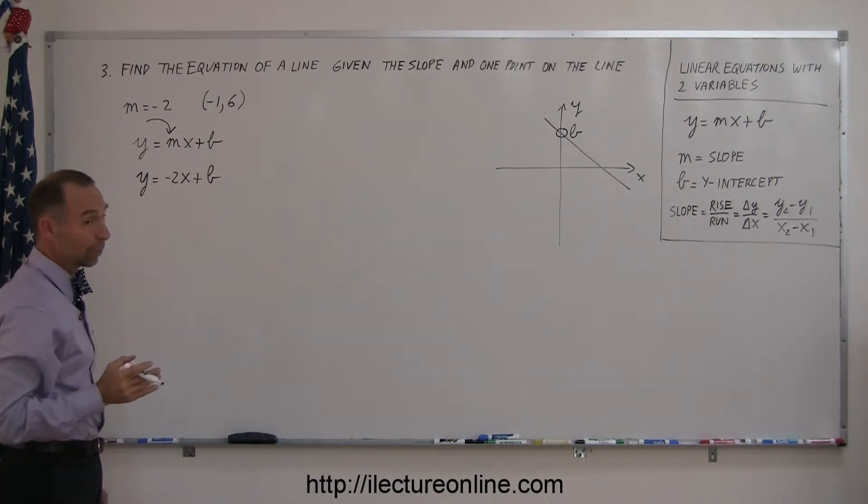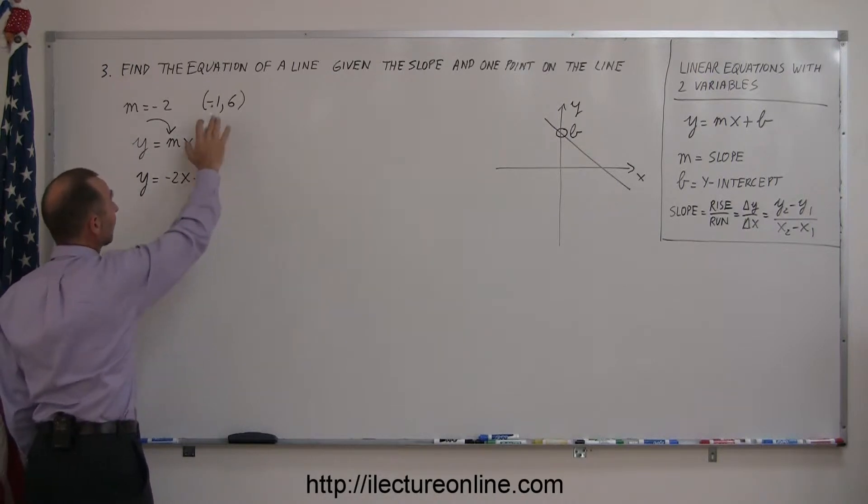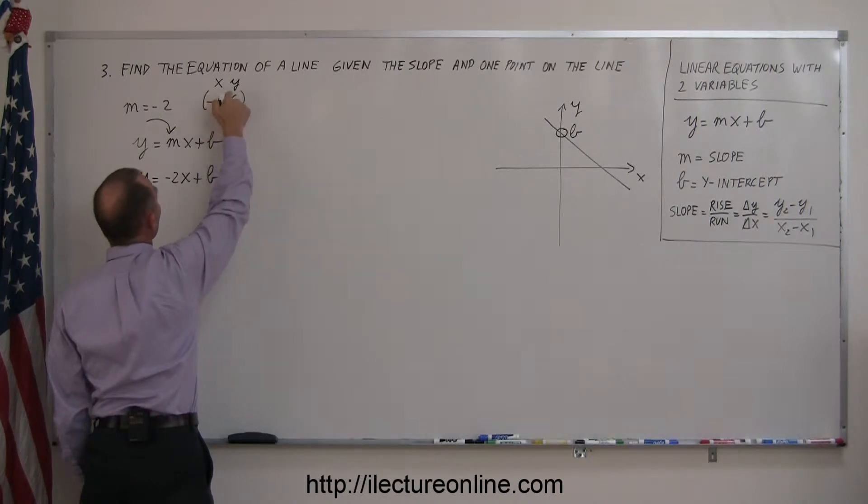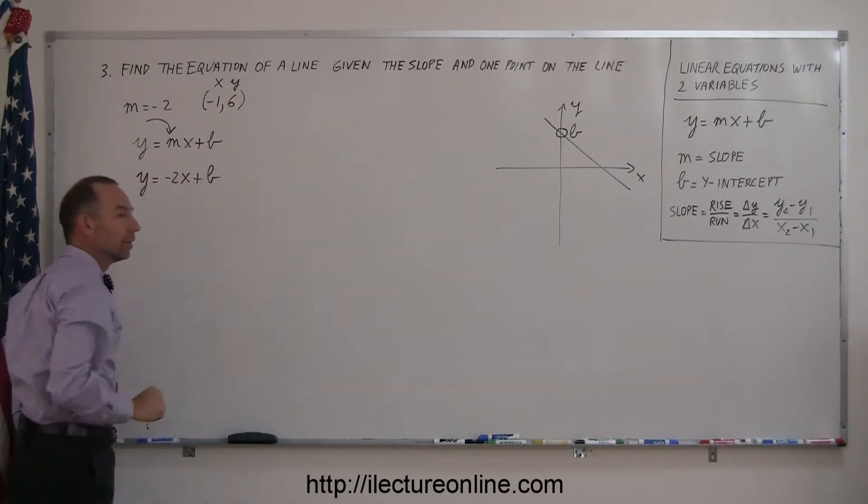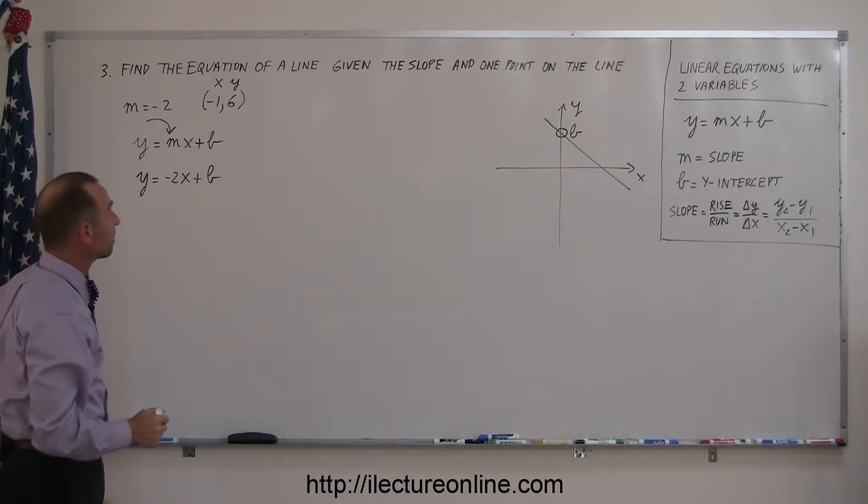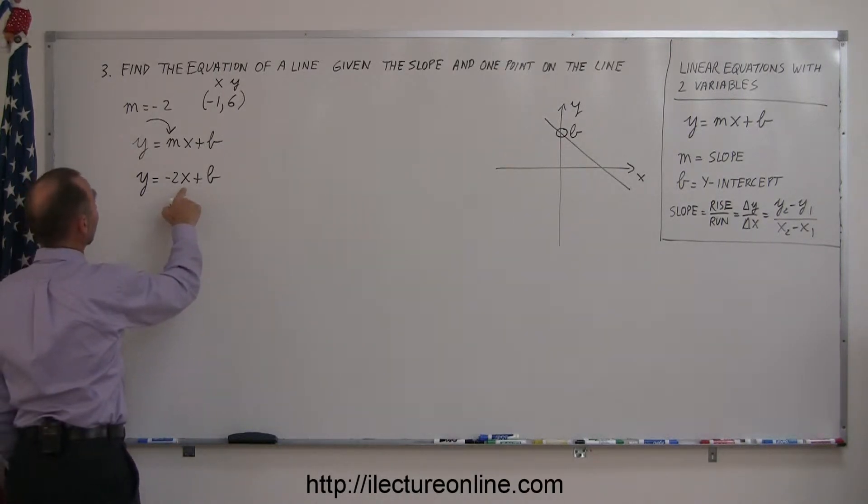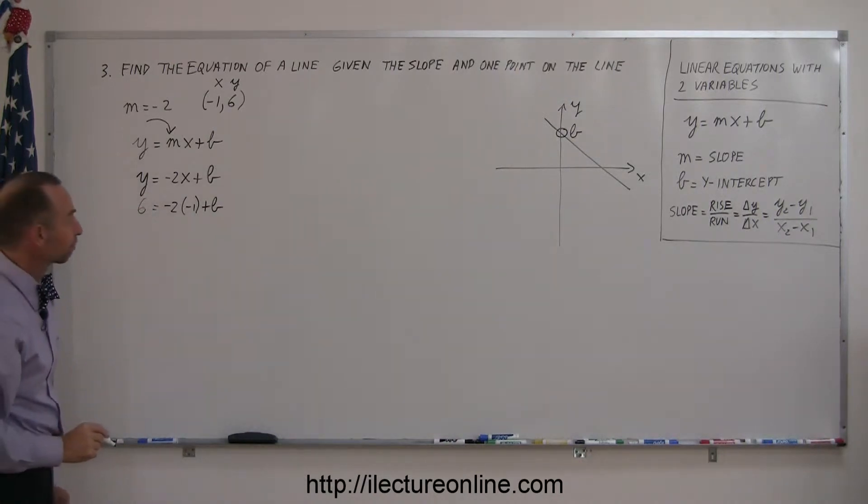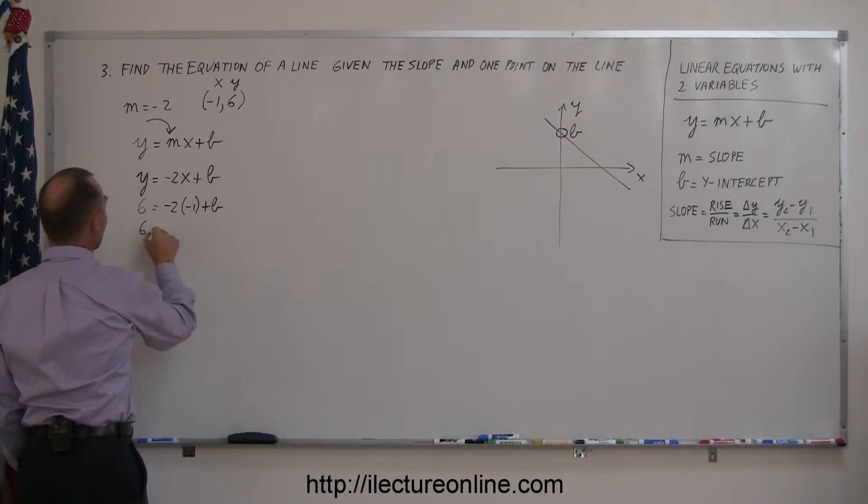The way to do that is to realize they have given me a point on the line, negative 1 and 6. So this is your x-value, this is your y-value. If you plug this x and y-value in your y and x here, you can then solve for b. If we replace every x by negative 1, so negative 2 times negative 1, and replace the y by 6, you can now solve this equation for b. We have 6 equals negative 2 times negative 1, that's positive 2, plus b. Move the 2 to the other side, subtract the 2 from this side, so we have 6 minus 2 equals b, or 4 equals b.